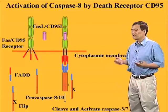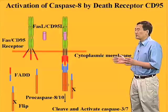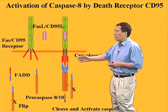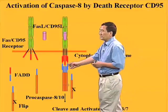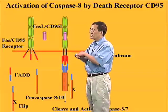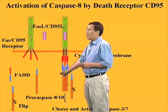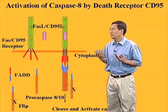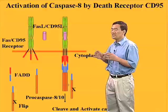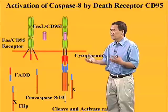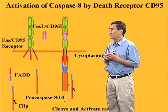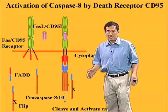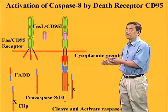Caspase-8 and caspase-10 each have two death-effector domains at their N-terminus. With FADD recruited to the receptor, procaspase-8 and -10 are also recruited to the receptor through interactions between the death-effector domains. Once caspase-8 is recruited to this receptor complex — also called DISC, for death-inducing signaling complex — caspase-8 and -10 become activated, similar to caspase-9 activation by the apoptosome, and subsequently cleave caspase-3 and -7, causing apoptosis.